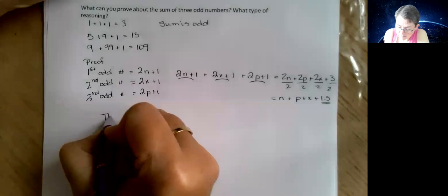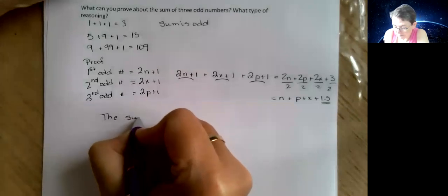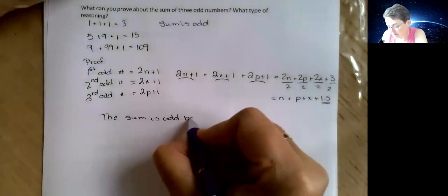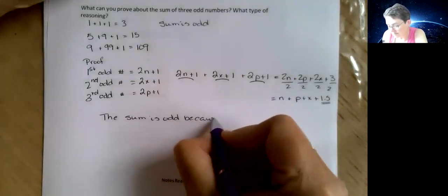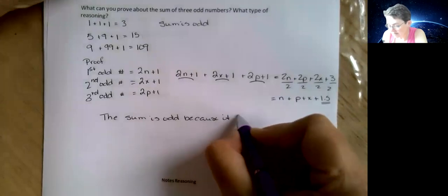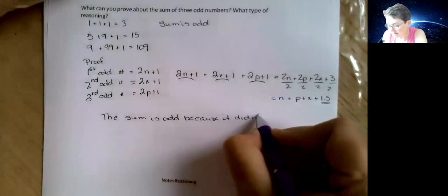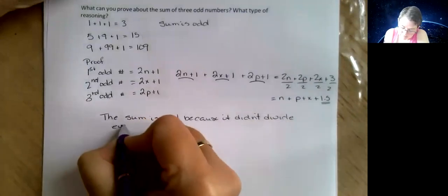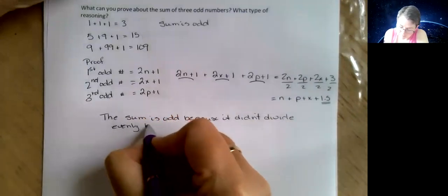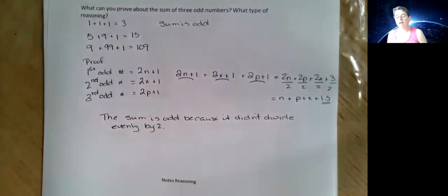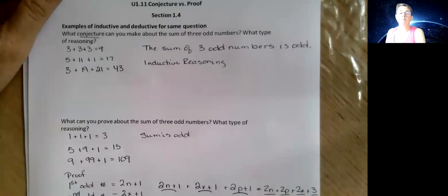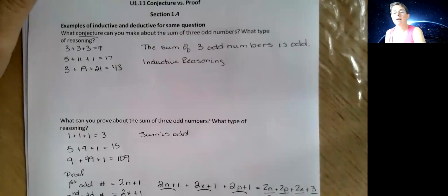And right there, there's your magic. It didn't divide evenly by 2, so it must be an odd number. The sum is odd because it didn't divide. And there we go, that is the difference.